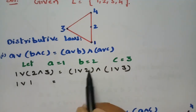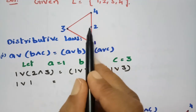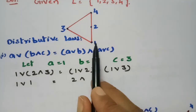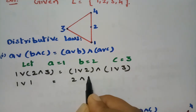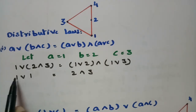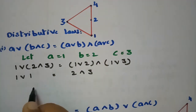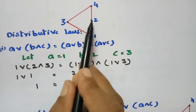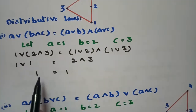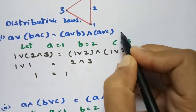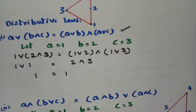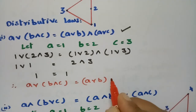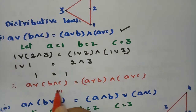Continuing on the RHS: 1 join 2 — the least upper bound of 1 and 2 is 2. Then 1 join 3 — the least upper bound is 3. So we have 2 meet 3 on the RHS. The greatest lower bound of 2 and 3 is 1. So LHS = 1 join 1 = 1, and RHS = 2 meet 3 = 1. Therefore 1 = 1, so LHS equals RHS, and the first condition is satisfied.